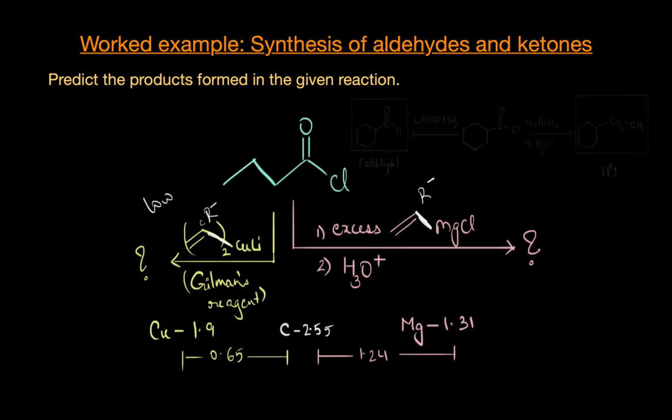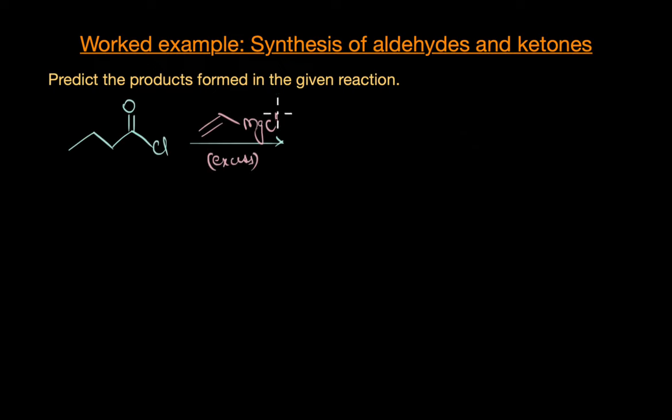Let's get back to our question here. Now that we've confirmed that Gilman's reagent is a lot less reactive and a lot more selective than Grignard reagent, let's see how the selectivity translates into our products. Let's look at the first reaction of our acid chloride with our Grignard reagent.